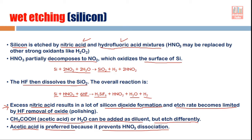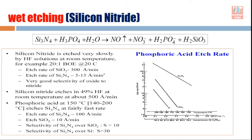Acetic acid is preferred as the diluent because it prevents HNO3 dissociation. If there is excessive nitric acid, a lot of SiO2 forms and it becomes difficult for HF to remove it fast enough. By using acetic acid, HNO3 dissociation is controlled, SiO2 formation is controlled, and it becomes more convenient for HF to remove that SiO2. So to control this reaction, it is sometimes better to use acetic acid as the diluent.